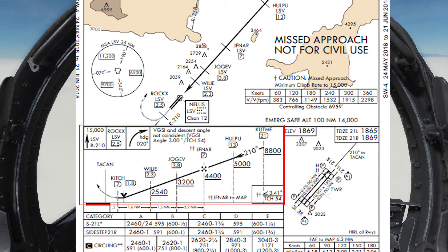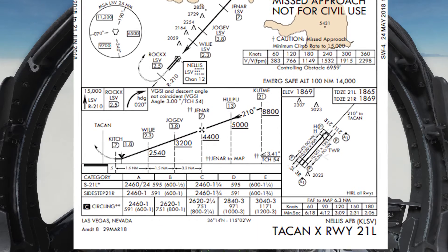The next thing to consider is our minima, which is the point we have to descend to. If we can't see the runway at that point then we need to go around. The Hornet is a Cat C aircraft, so moving along to the right to the C category, we see our minima is 2,460 feet above mean sea level, which also roughly gives us about 590 feet above the ground. Conveniently, the clouds are set on this server to about 610 feet, so this is going to be a fun approach.